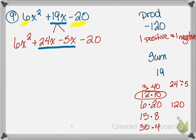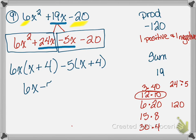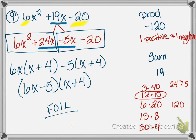Now I look at the first two terms: 6x squared and 24x. I pull out a 6x, leaving x plus 4, because 6x times x is 6x squared and 6x times 4 is 24x. Then I look at the last two terms and pull out a negative 5, leaving x plus 4. So the expression factors to (6x minus 5)(x plus 4). You can check by FOILing to get back to the original trinomial.